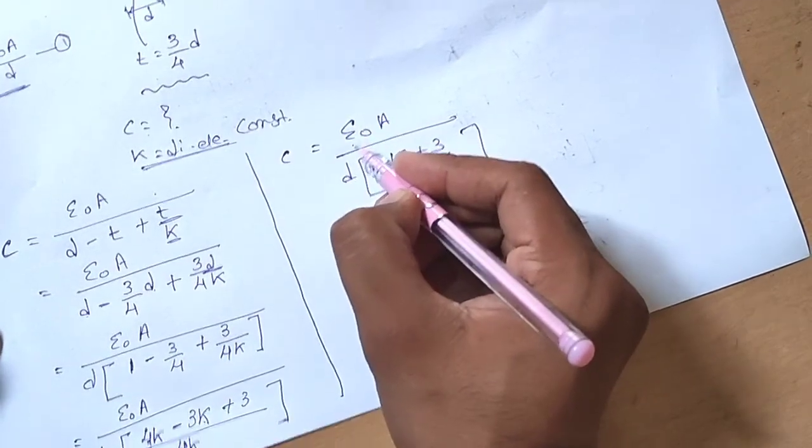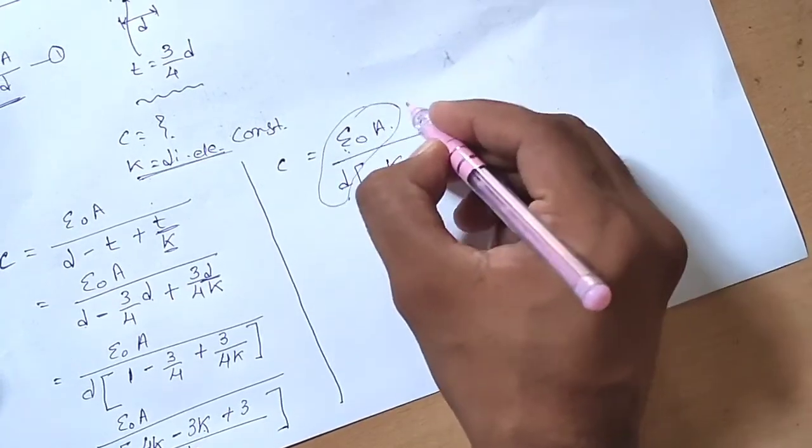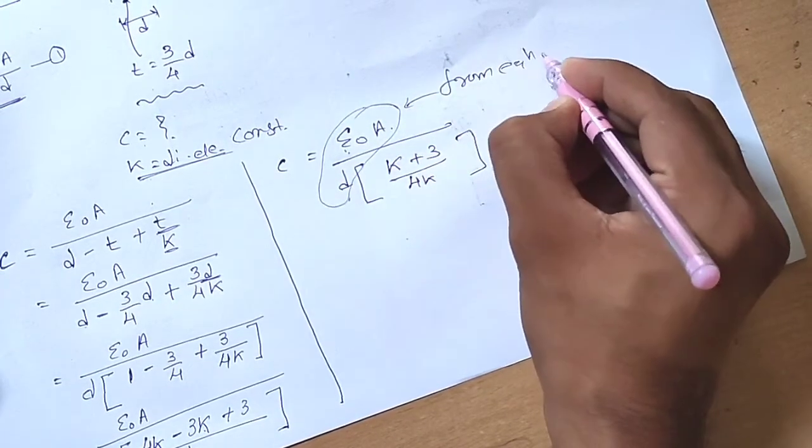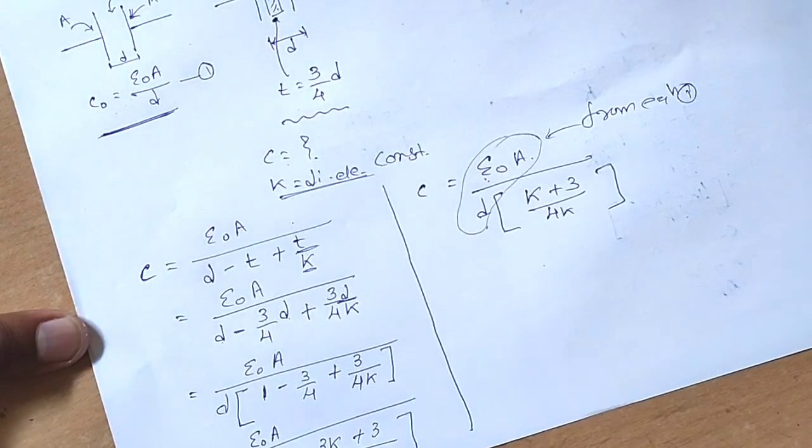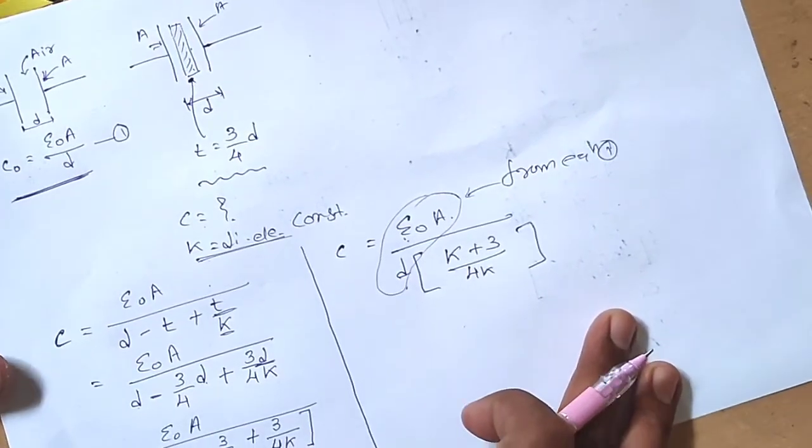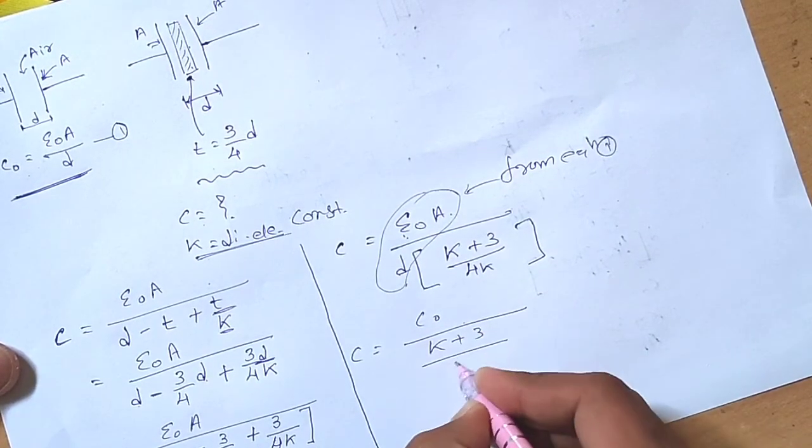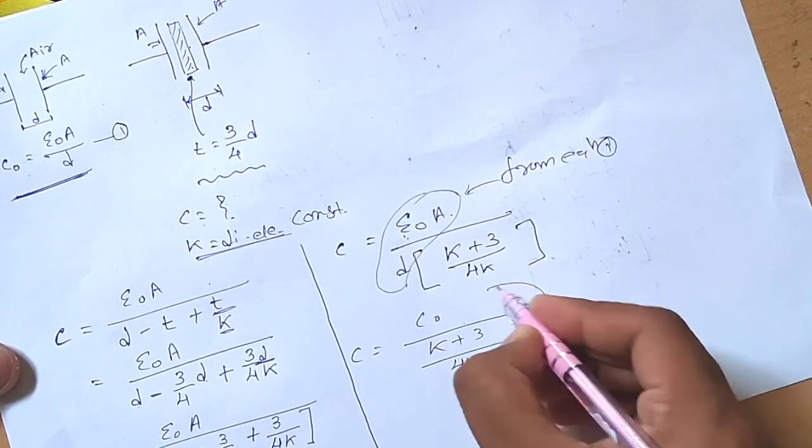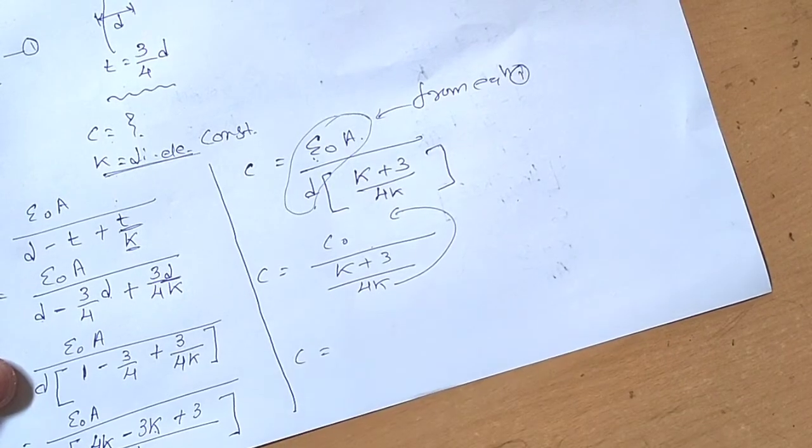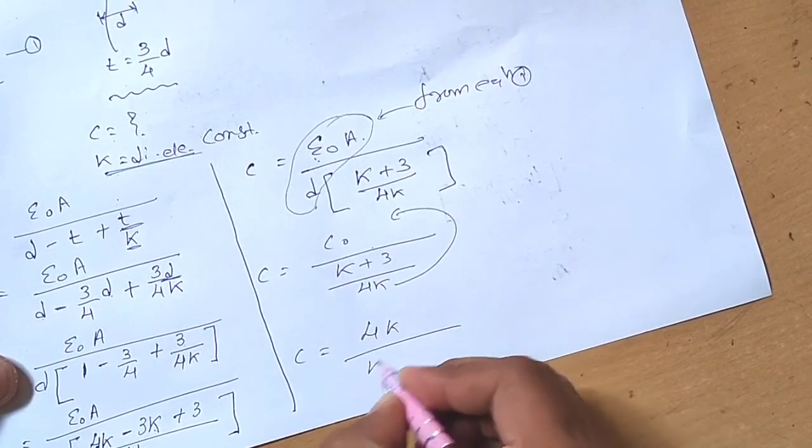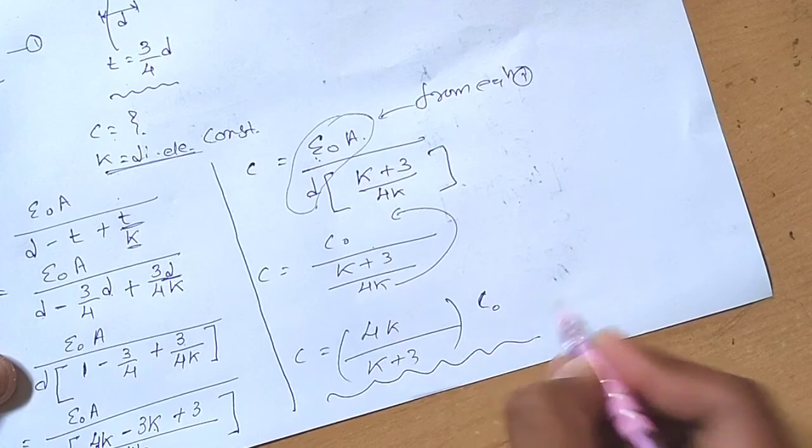From equation one, we already defined that C₀ = ε₀A/d. So we can substitute this value. Therefore C = C₀ × 4k/(k + 3), which is our answer.